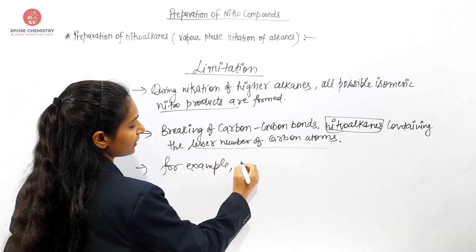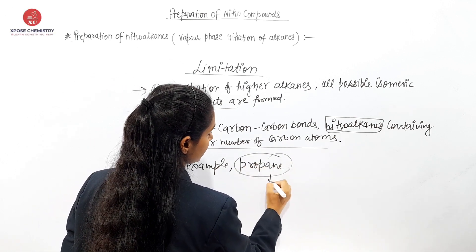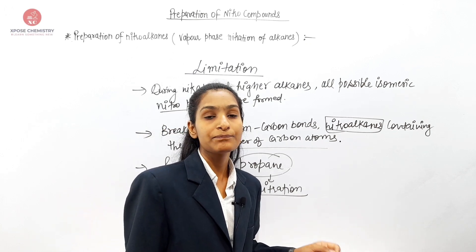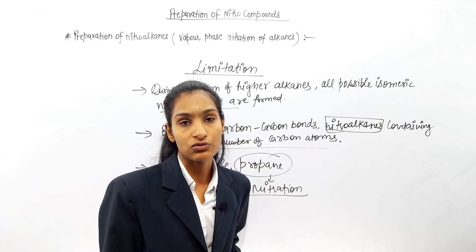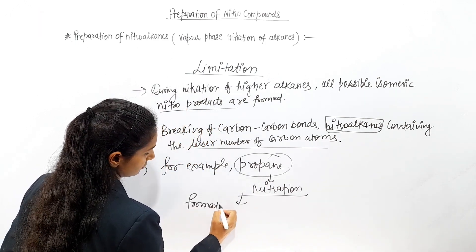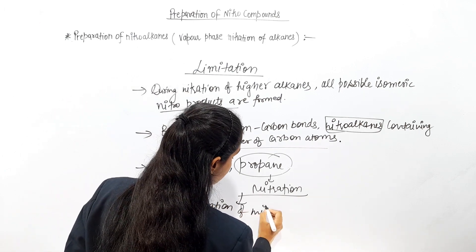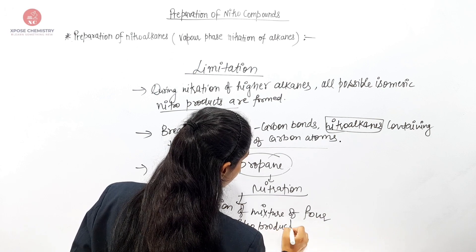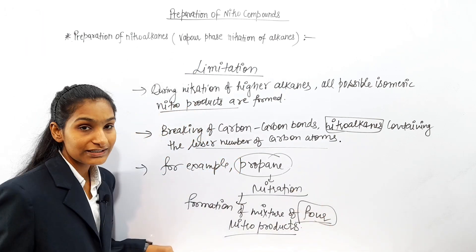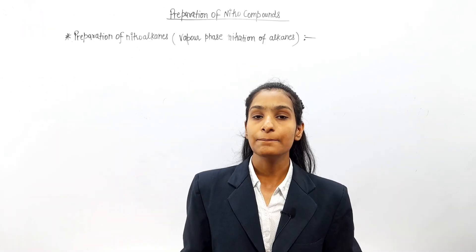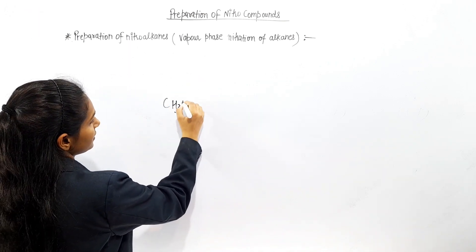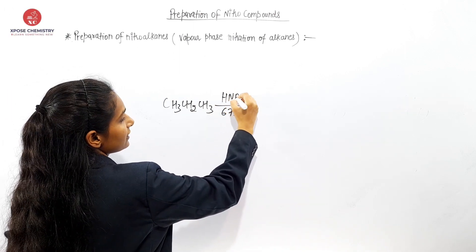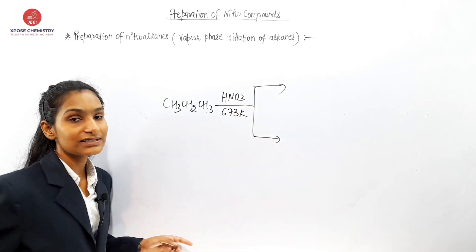For example, let us take propane: CH3-CH2-CH3. If propane undergoes nitration at about 673 Kelvin with nitric acid, here we will get 4 nitro products and we will see the mixture.